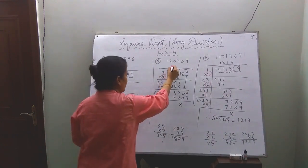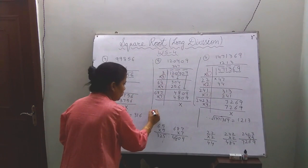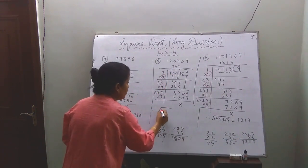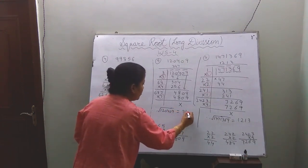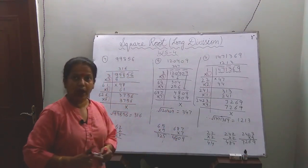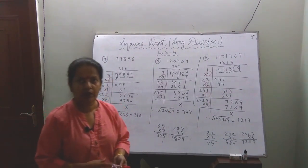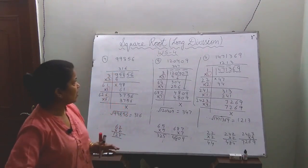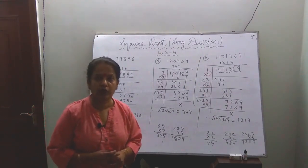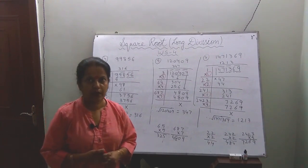Don't forget to write the answer: 3, 4, 7. Therefore the square root of 120409 is 347. I hope that this long division method is clear to all of you, and this method is very useful for your competitive exams also. Thank you. Have a nice day.